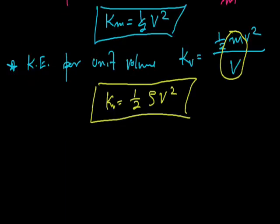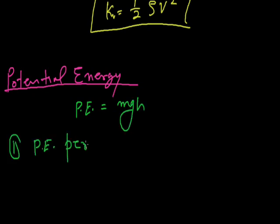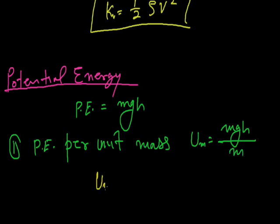Now next topic is potential energy. We know that potential energy is equal to mgh. The potential energy per unit mass, Um, is equal to mgh by m, or Um is equal to gh.